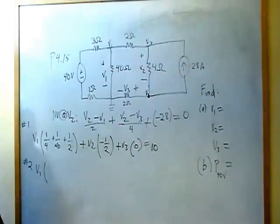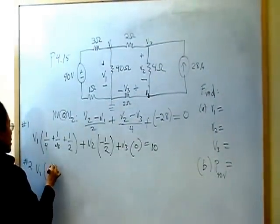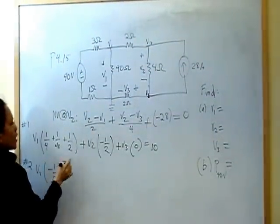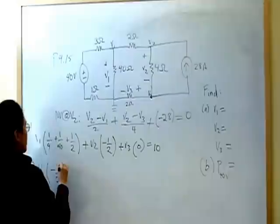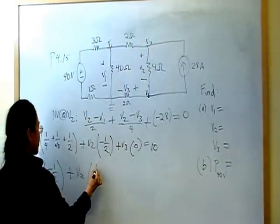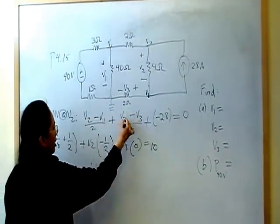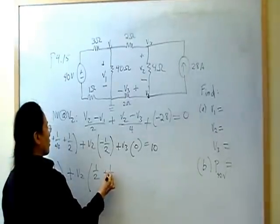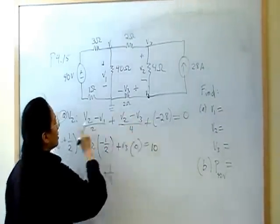Now, my number two equation. I'm going to write it out for my calculator. V1, how many do I have? I have negative one half right there. Anything else? No other V1s. Close that off. Plus V2, what do I have? I have one half and one fourth plus one fourth and nothing else.